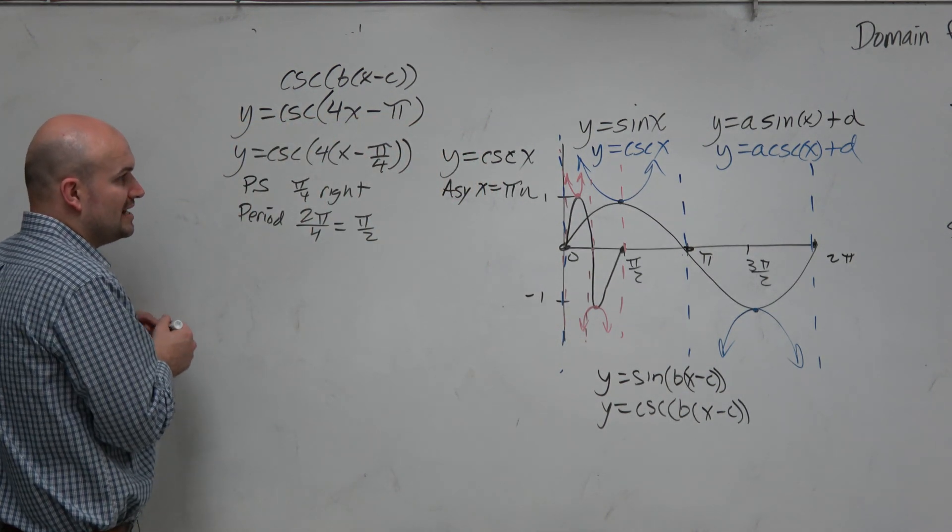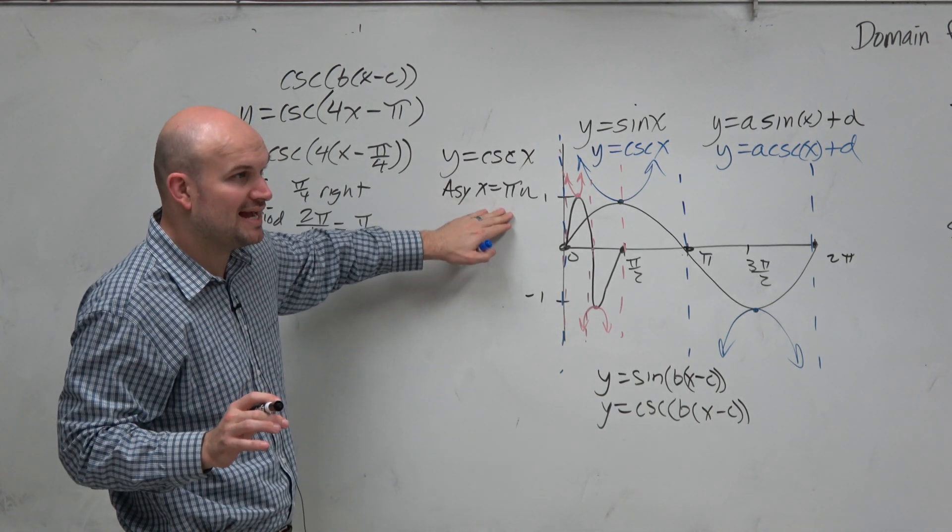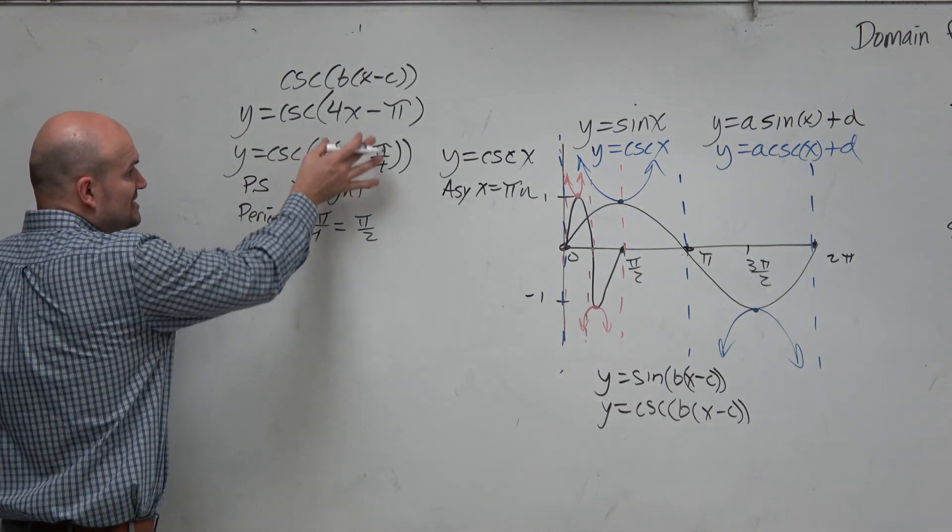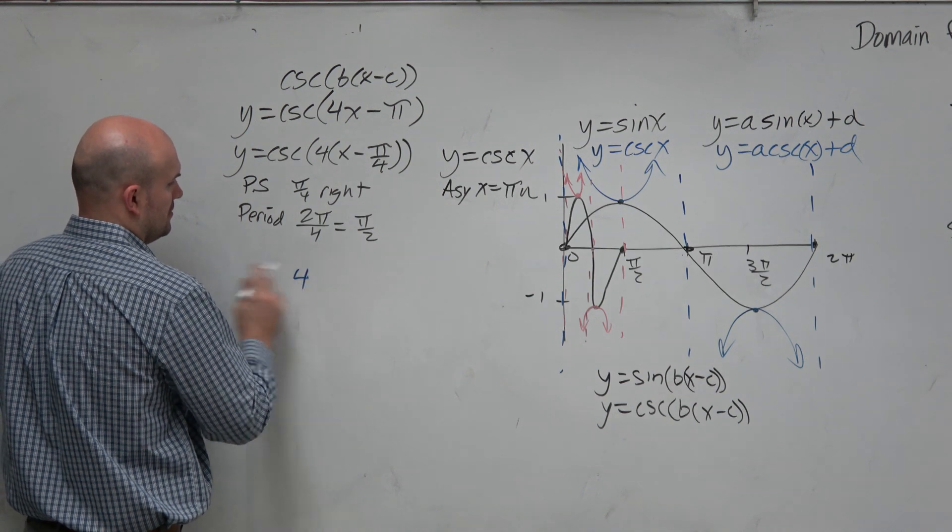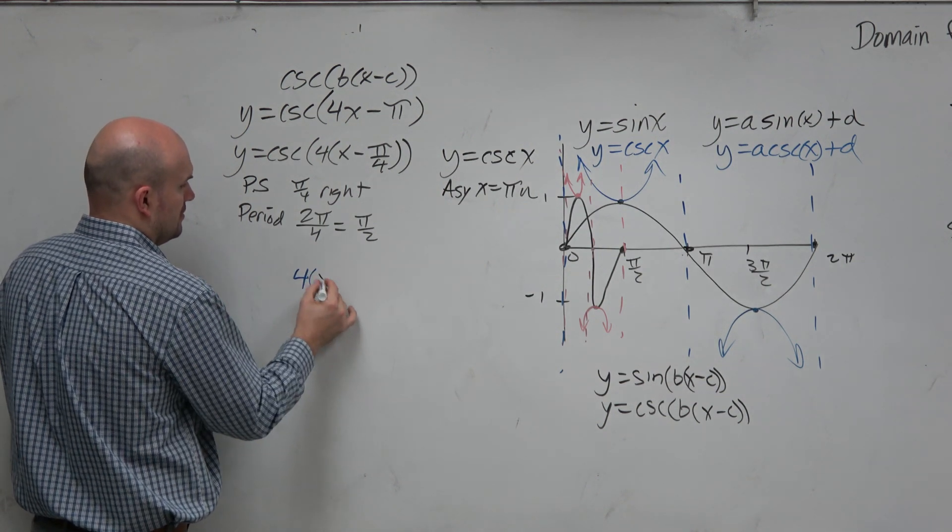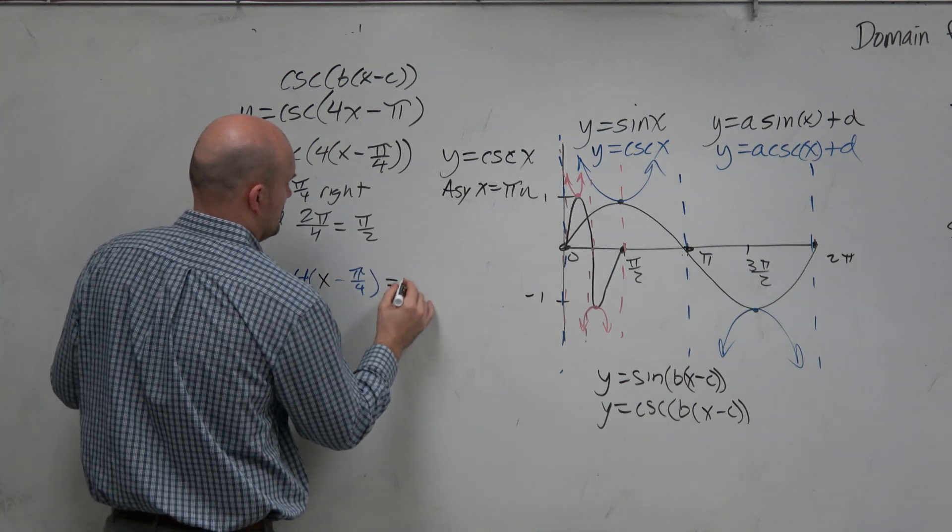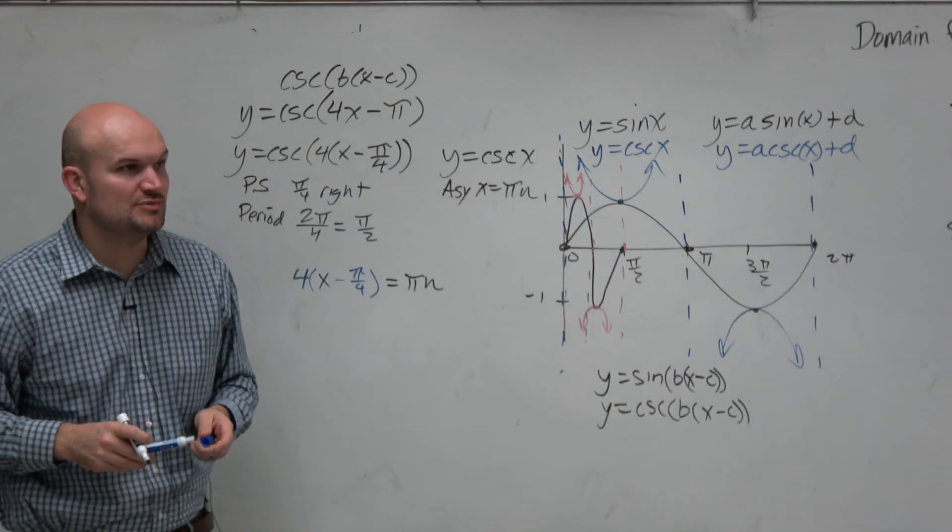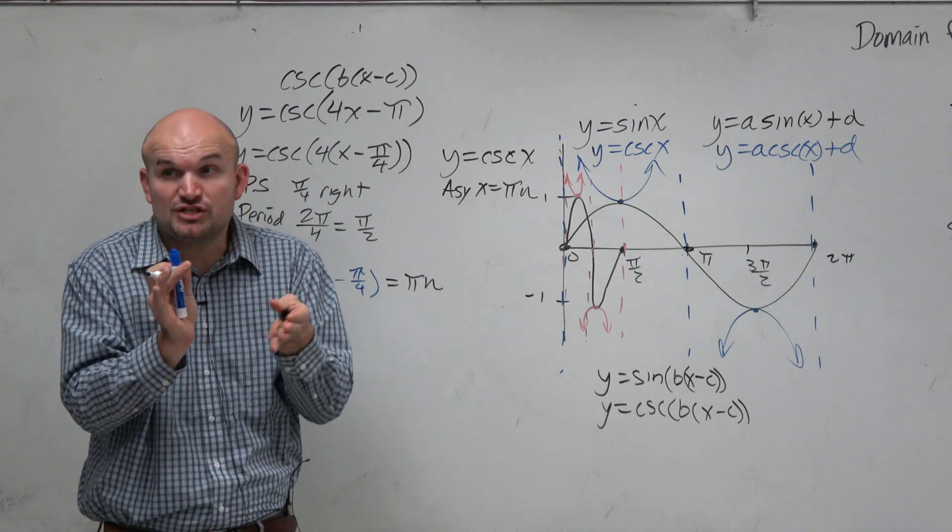So what we want to do, guys, is if we know the asymptote of cosecant with no changes inside is pi n, well, then what we're going to want to do is just represent the changes. Set the changes equal to your asymptote equation. Because those are what's affecting the graph, the compression as well as the shift.